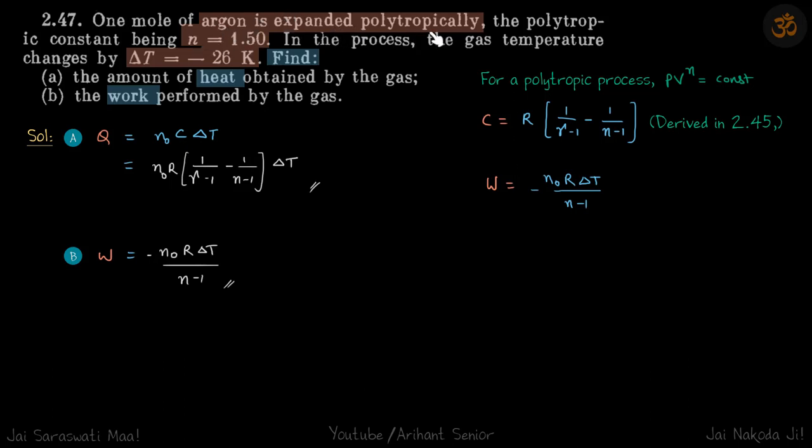Argon is expanded polytropically. The polytropic constant is given and delta T is given. We need to find the heat obtained by the gas and work performed by the gas. We have already derived this formula for any polytropic process.